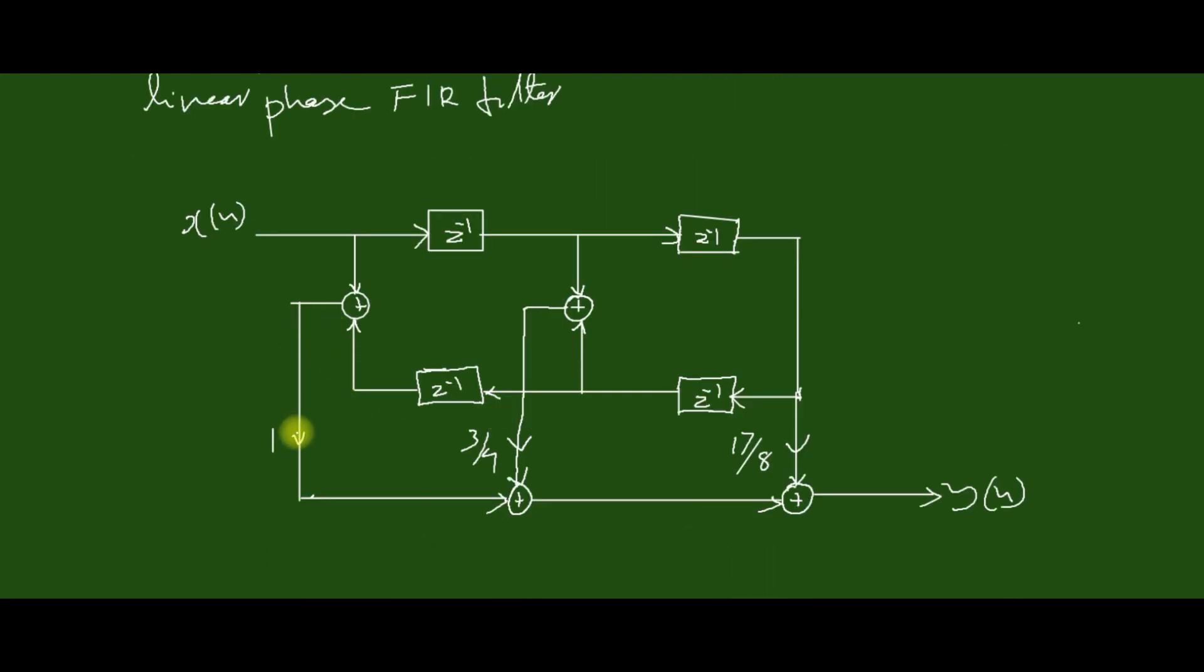So here we can see that the number of multipliers become half. This is the final structure. So with this, you will get high marks.